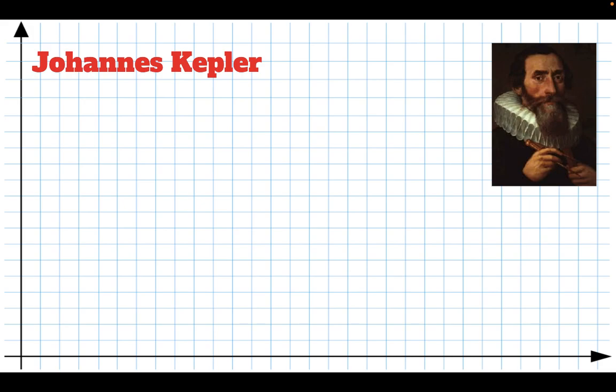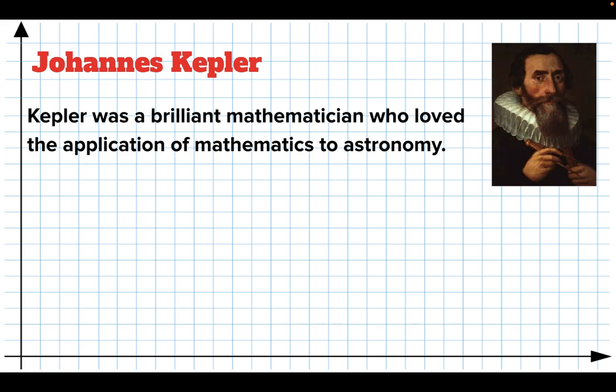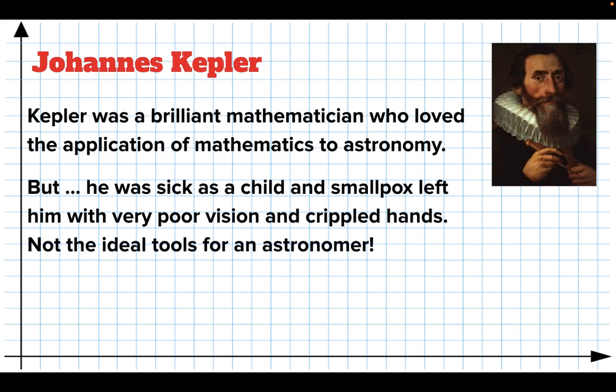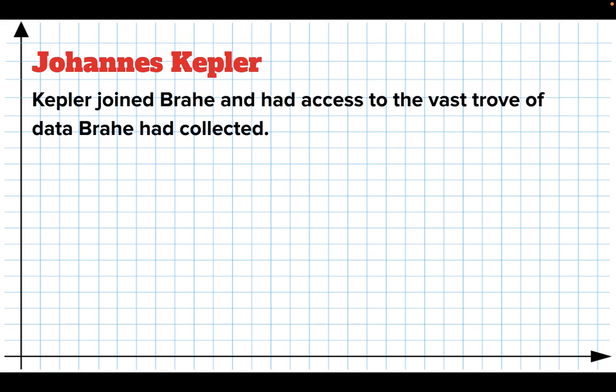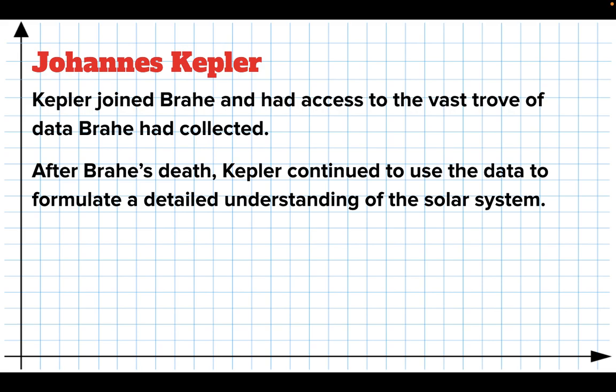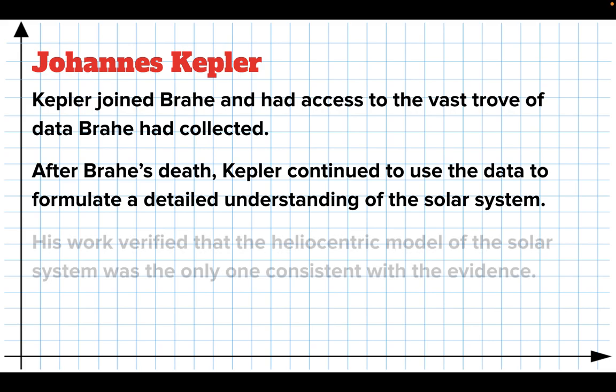So Kepler is a prodigy. He's a brilliant mathematician. And he is interested in astronomy, which at the time didn't seem to make any sense. I mean, if God controlled the heavens and rotated the spheres, why would you care about mathematics if you're trying to figure out what God is doing up there with the spheres? But he was trying to apply his mathematics to astronomy. But he had a problem when he was small. He had smallpox. And it left him with really poor vision and crippled hands. And if you're going to be an astronomer, you've got to have some good vision. Either that or you've got to have some really good data. So it turns out he hooks up with this Brahe who gets kicked out of Denmark. And Kepler has access to all this data. Brahe eventually dies. And Kepler continues to pour through the data to formulate an understanding of what's going on with the solar system.